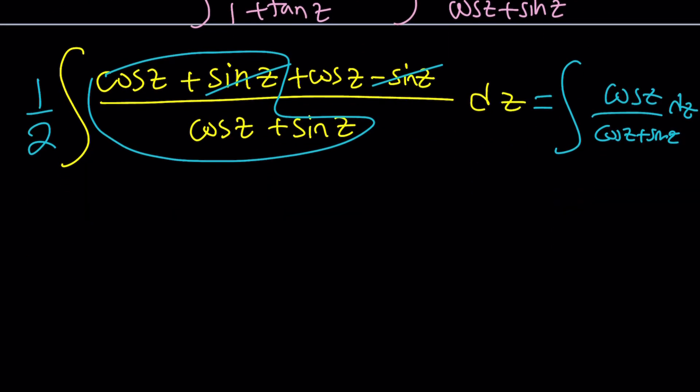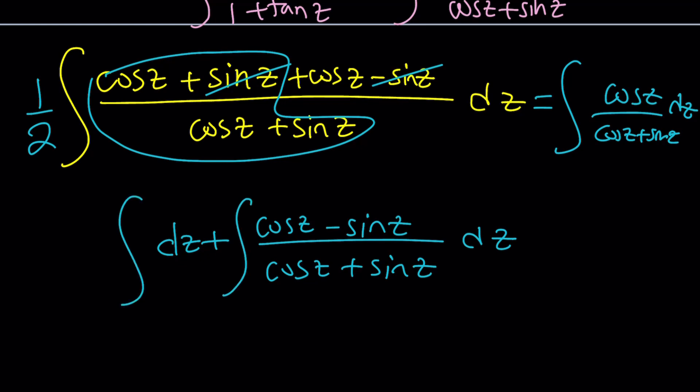This is going to be one, plus, and that's going to be cosine z minus sine z divided by cosine z plus sine z. And the whole thing is dz. So I could probably do this. Put a dz here and put a dz here and separate them into two integrals. Awesome. So it's going to be the sum of two integrals and there's going to be a one half all the way on the outside.